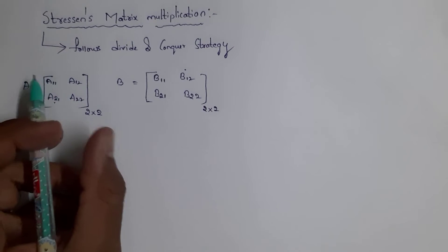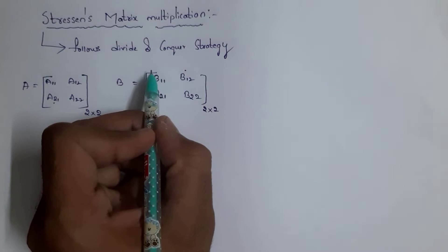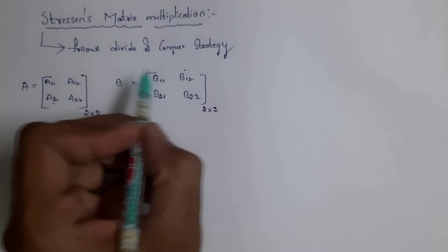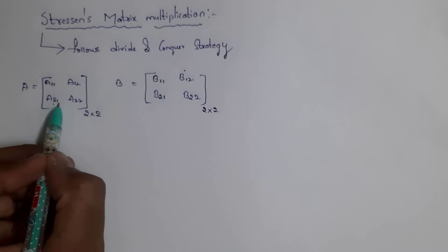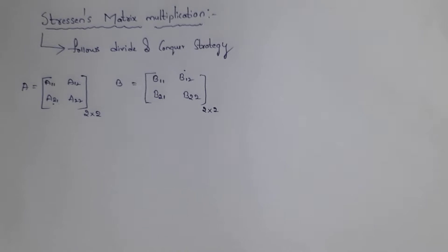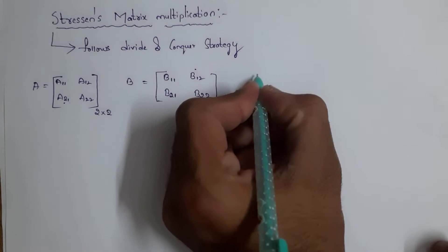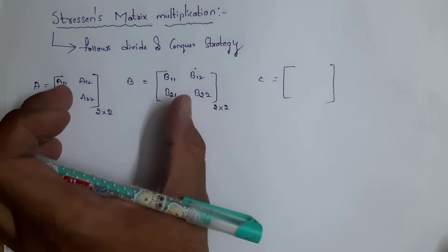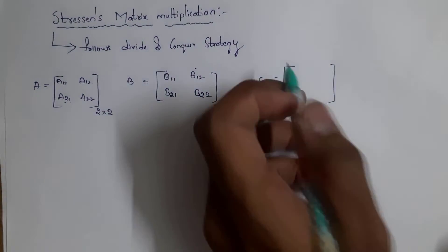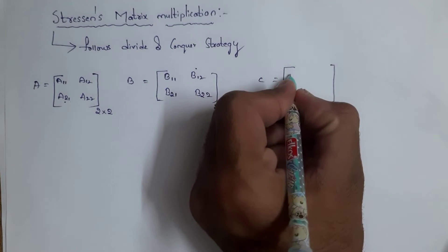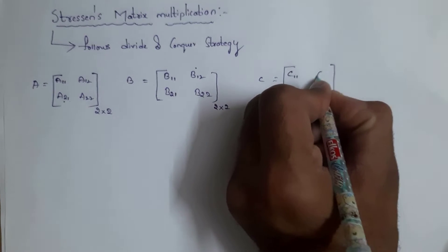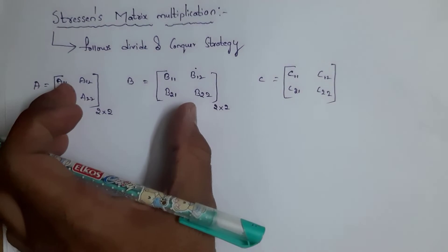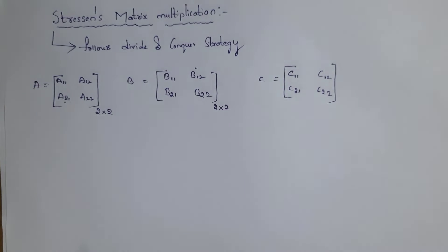Similarly, inside matrix B I written b11, b12, b21, and b22. The meaning of this is: first row first column, first row second column, second row first column, and second row second column. Both are 2×2 matrices. By applying Strassen's matrix multiplication on these two matrices we will get the value of C. Inside matrix C I written c11, c12, c21, and c22.